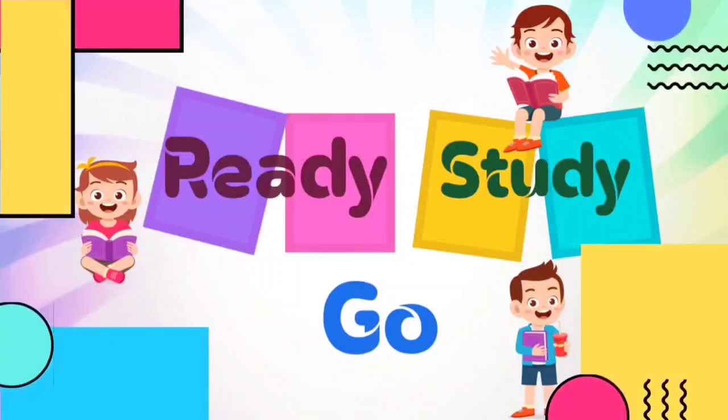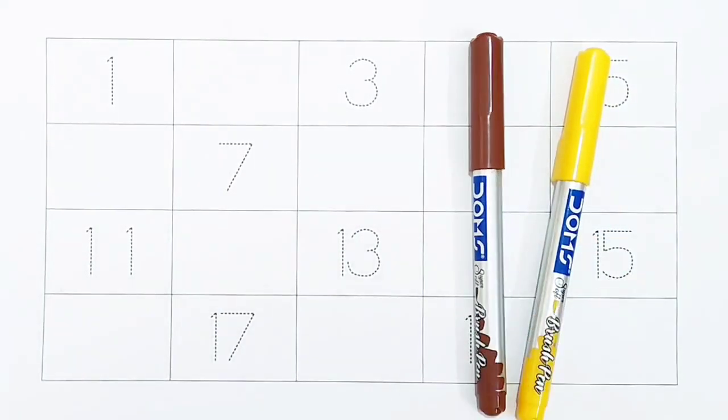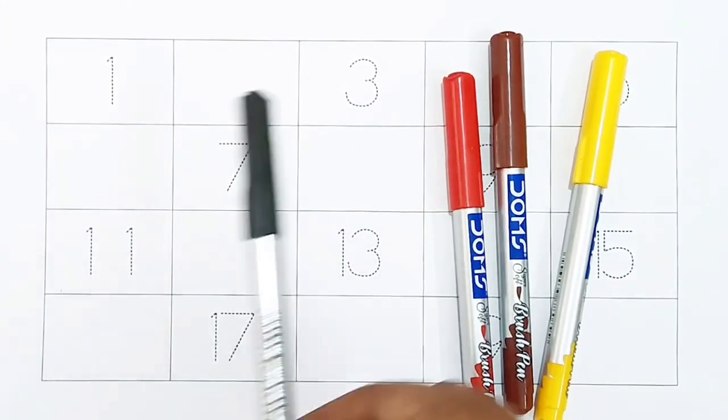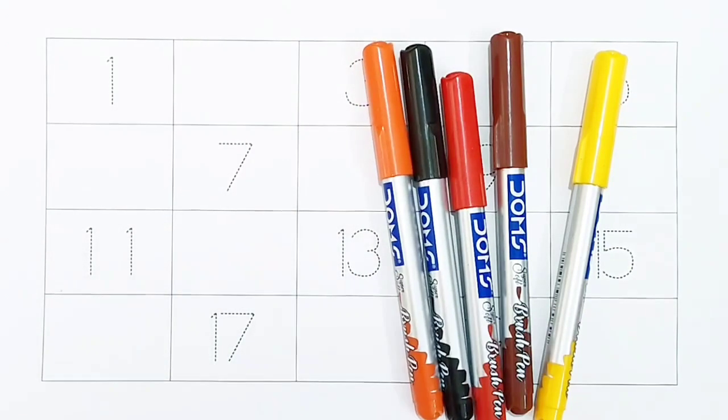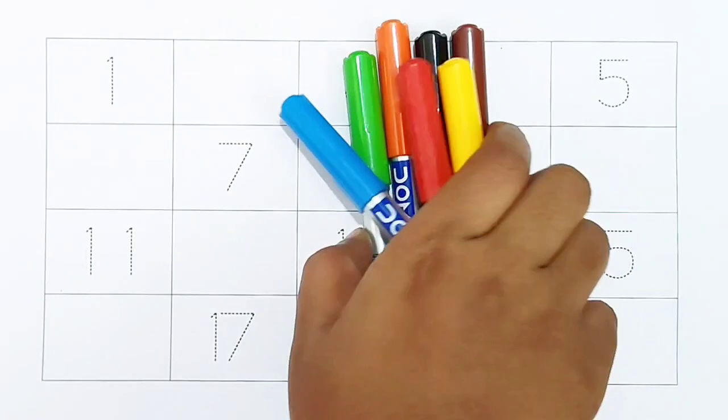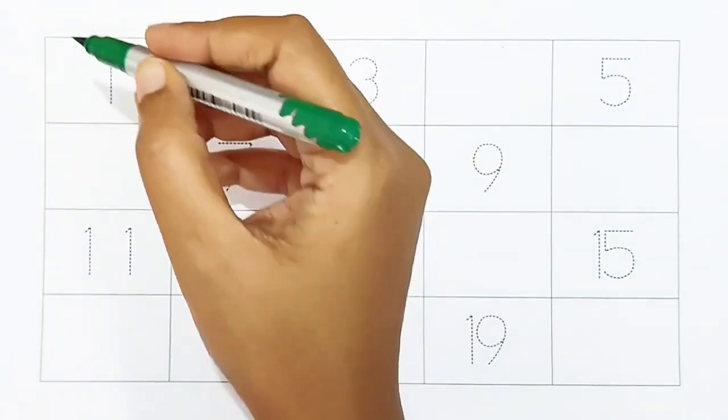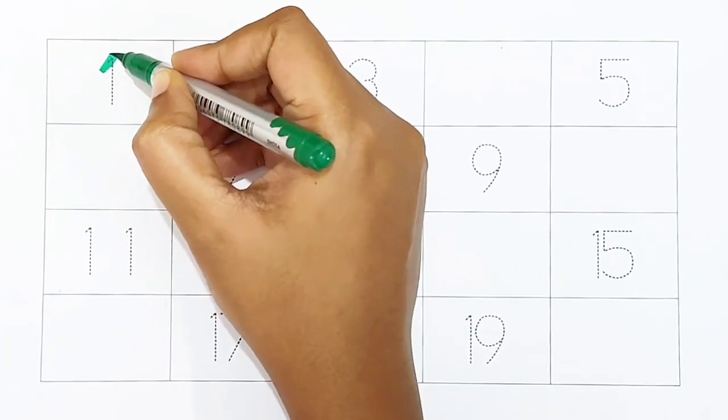Ready, study, go! Hi kids, today we can learn the numbers from 1 to 20. Let's begin. 1, dark green color.